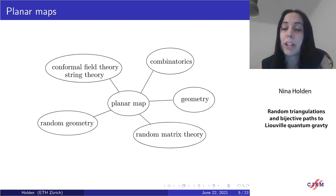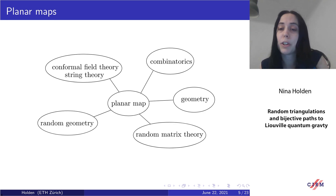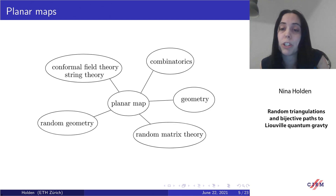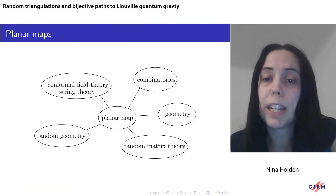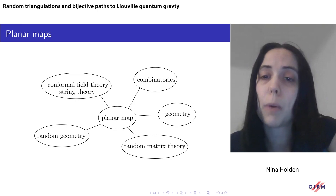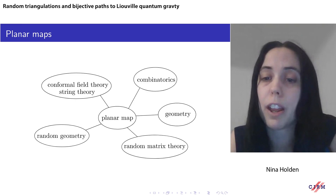Planar maps have been studied in many different branches of both math and physics. The study of planar maps in the math literature goes back at least to the 1960s, with Tutte and others proving enumeration and counting formulas. Later they were studied in geometry and random matrix theory. One application relevant to this talk is in random geometry, where probabilists study the geometry of large random planar maps. Another application relevant to Liouville quantum gravity is in conformal field theory and string theory, where planar maps are used as models for random surfaces.